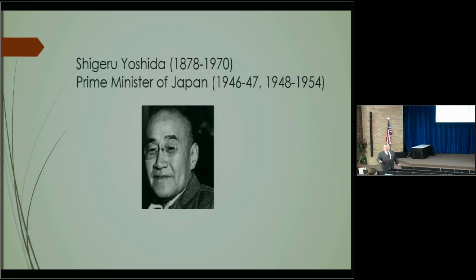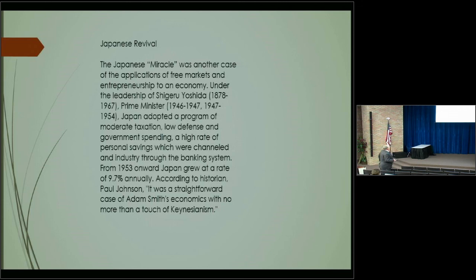Japan's problem today is demographics. But for that time, the prime minister lowered taxes and regulations — adopted a program of moderate taxation, low defense spending because the U.S. was defending them, and a high rate of personal savings channeled into industry. From 1953, Japan grew at a rate of 9.7 percent. That was straightforward Adam Smith. Since 1990, Japan has been practicing Keynesianism and quantitative easing — and it hasn't worked.